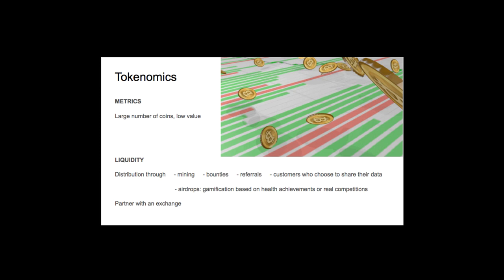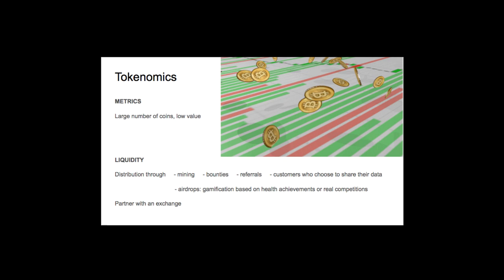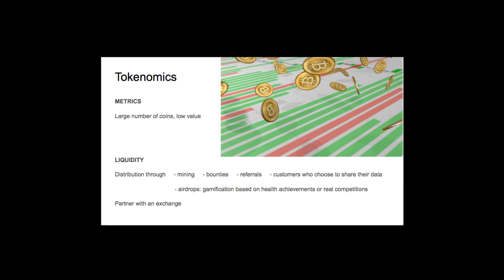Tokenomics is crucial for sustainability. It defines the system properties and can be seen as the monetary policy of a currency. Phoenix will have a utility token with a large number of coins and a low value.